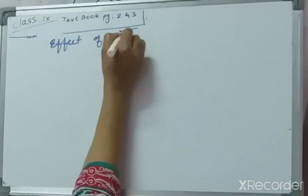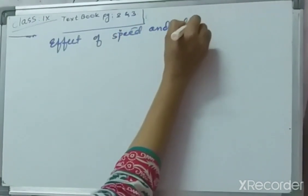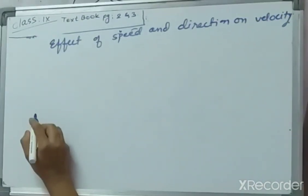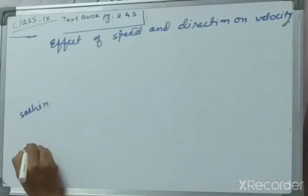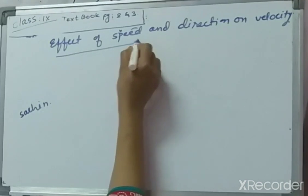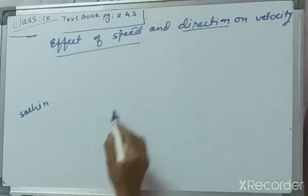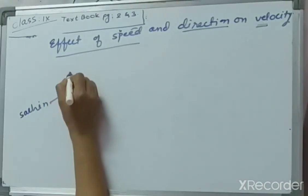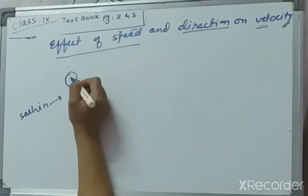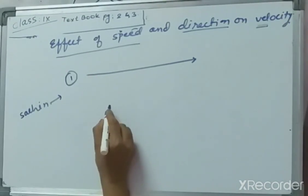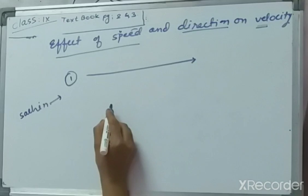Effect of Speed and Direction on Velocity. Say for example Sachin is travelling on a motorbike. We need to explain the effect of speed of Sachin as well as the effect of direction changed by Sachin on the velocity of the motorbike. Let us take the first path which Sachin is moving. If Sachin is travelling on a straight path, what will be the effect on the velocity of the motorcycle if its speed increases or decreases but the direction remains unchanged?